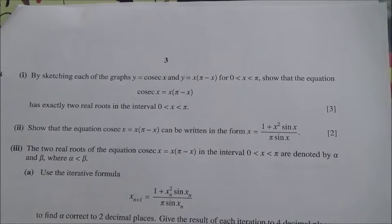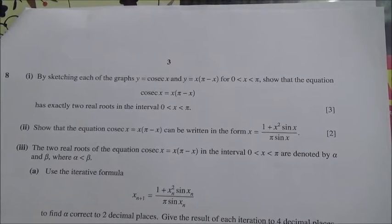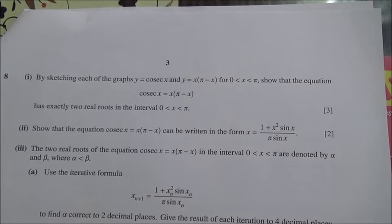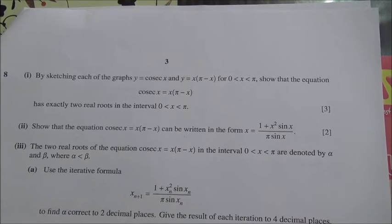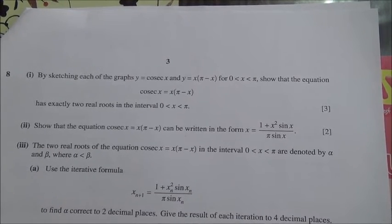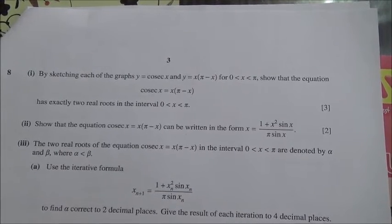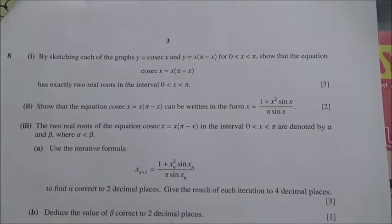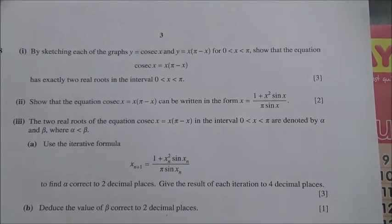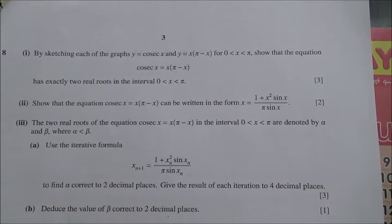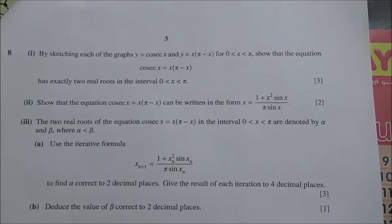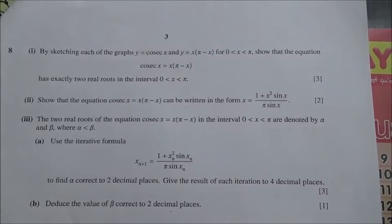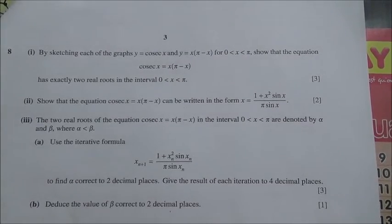For the third part, the two real roots of the equation cosec x = x(π − x) in the interval zero to π are denoted by α and β, where α is greater than β. Use the iterative formula x = (1 + x² sin x) / (π sin x) to find α correct to two decimal places, giving the result of each iteration to four decimal places.